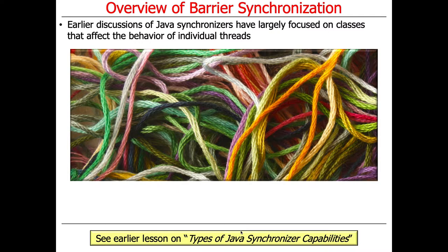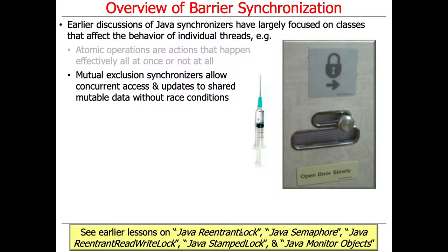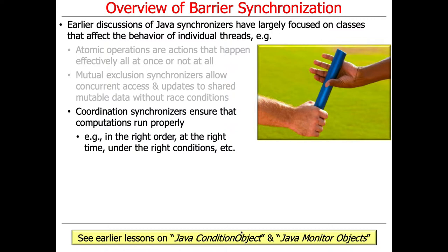Earlier discussions on synchronizers have focused on classes that affect the behavior of individual threads. For example, atomic operations are actions that either happen all at once or don't happen at all, like the transporter beam we talked about. Mutual exclusion synchronizers allowed concurrent access and updates to shared mutable data without incurring race conditions, allowing threads to take turns accessing critical sections, typically one at a time. And coordination synchronizers, like Java condition objects, ensure that computations run properly, in the right order, at the right time, under the right conditions. Those are the three general categories of synchronizers we've talked about heretofore.